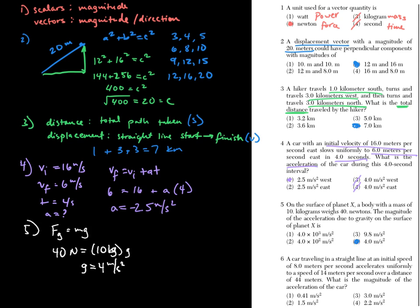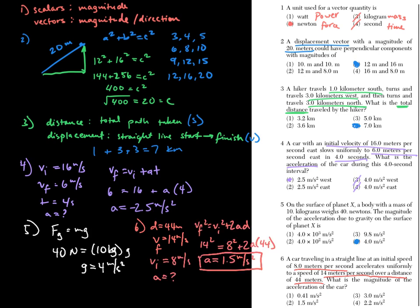Number six is another kinematics calculation question. The early part of the test is very kinematics-heavy. Given the known quantities, you solve for acceleration using the kinematics equation and get 1.5 meters per second squared. There's no negative sign since no direction is indicated — the object is going in a straight line and speeding up. The answer is choice two.